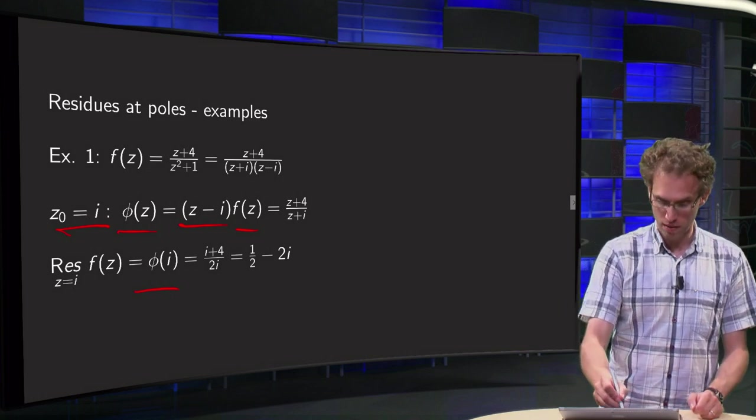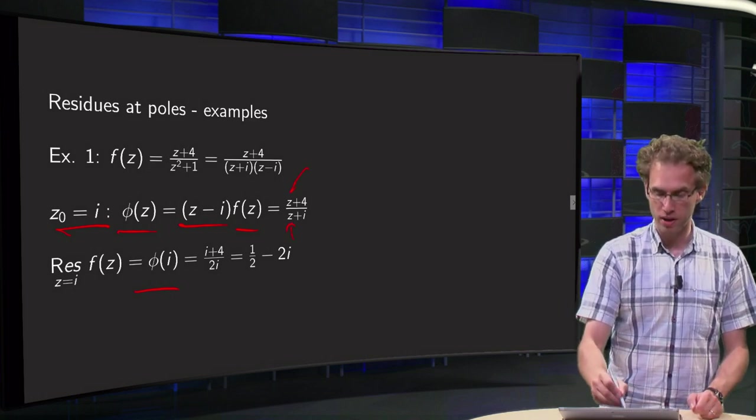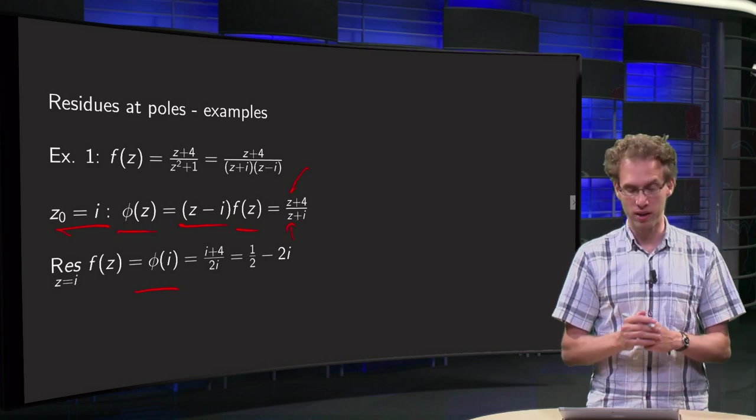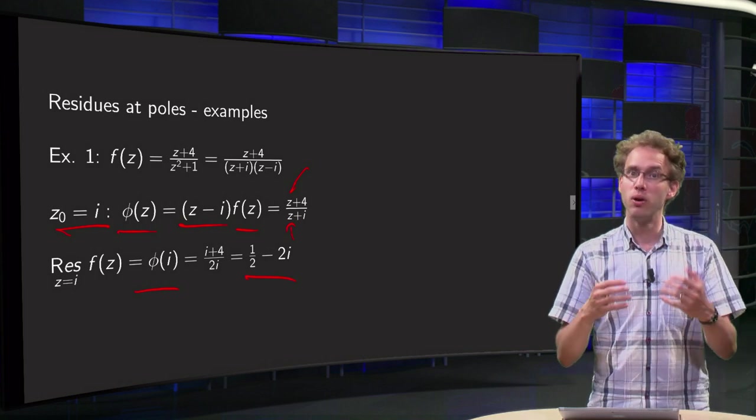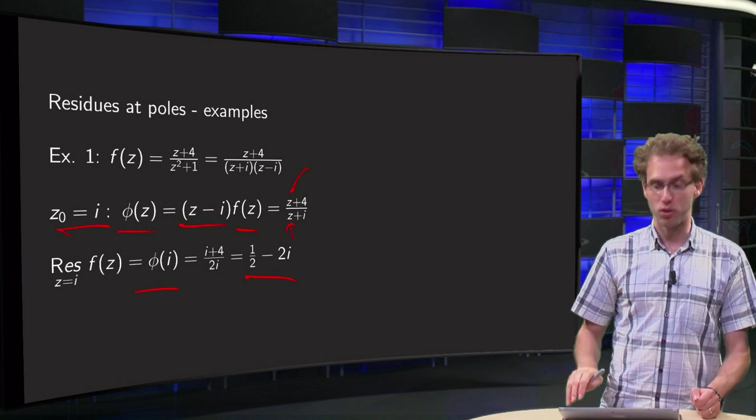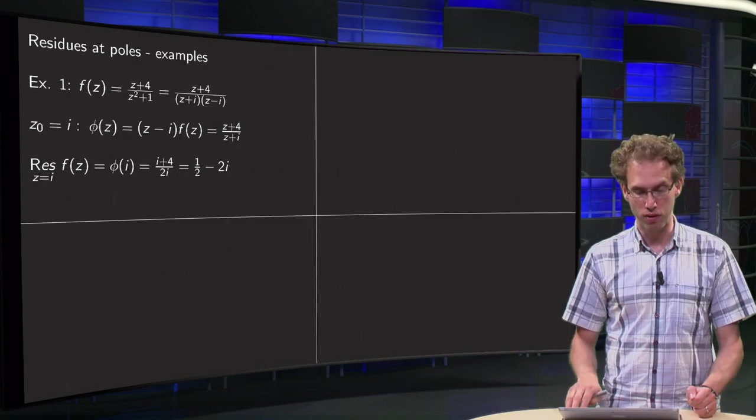So plug in i over here and i over there, so we get i plus 4 over 2i equals 1 half minus 2i. Computing the residue at the first order pole is really easy with our formula.